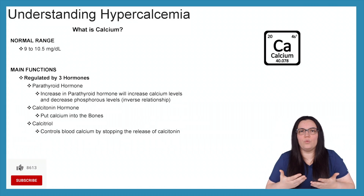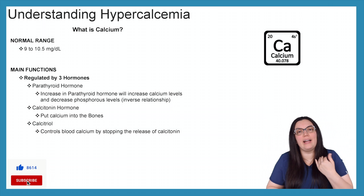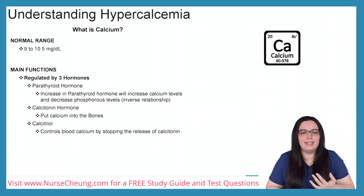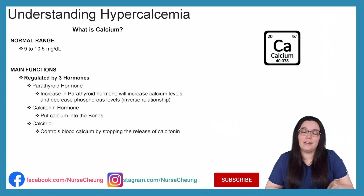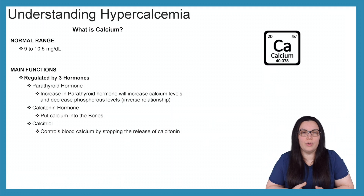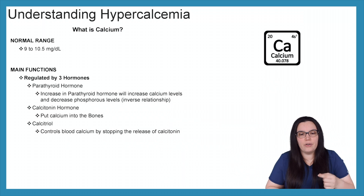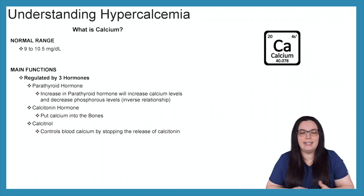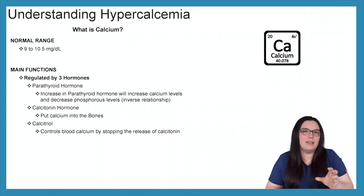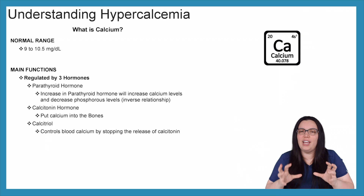In order to understand what happens with our electrolyte imbalances, we really have to understand what the electrolyte is, and we're going to start with calcium. The normal range of calcium is between 9 to 10.5 milligrams per deciliter. The main function of calcium is it really helps regulate three hormones found within our body. The first is our parathyroid hormone. If we have an increase in parathyroid hormone, it will cause an increase in serum calcium levels and a decrease in phosphorus levels. Calcium and phosphorus really have an inverse relationship.